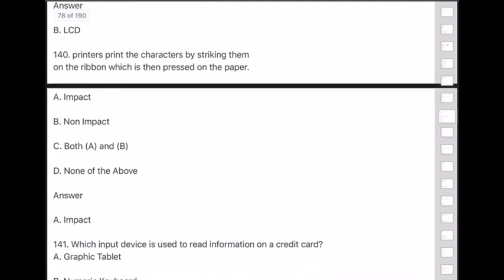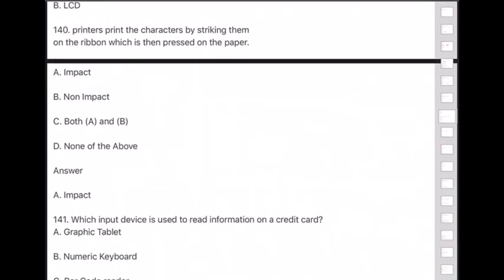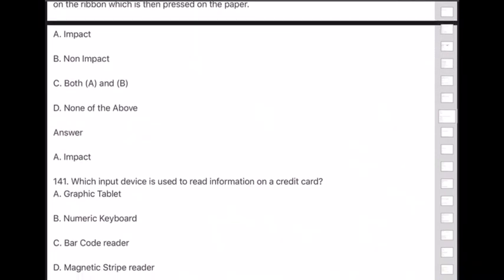Question 141: Which input device is used to read information on a credit card? Answer is option D — magnetic stripe reader.